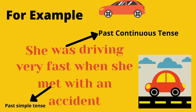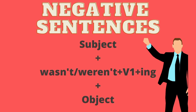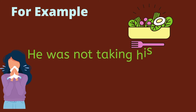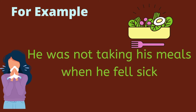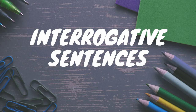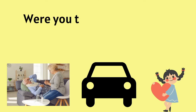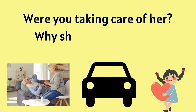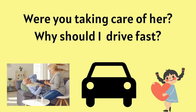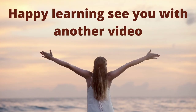For negative sentences, the structure is: subject plus was not/were not plus first form plus -ing plus object. For example: 'He was not taking his meals when he fell sick.' For interrogative sentences, we invert the auxiliary: 'Were you taking care of her?' or 'Was she driving fast?' We can continue to practice this tense going forward.